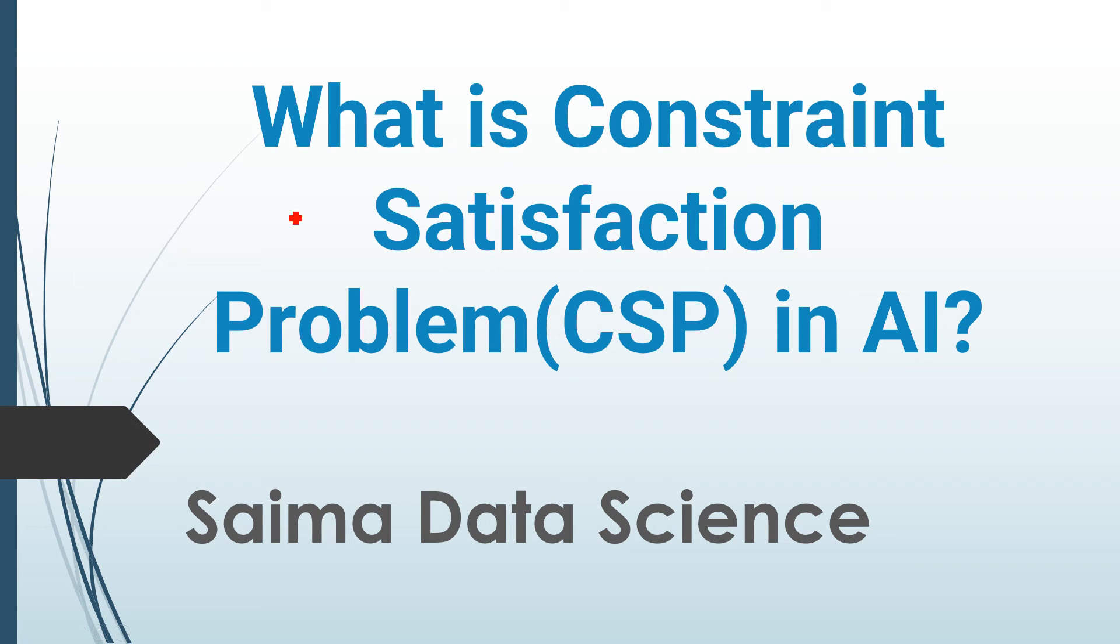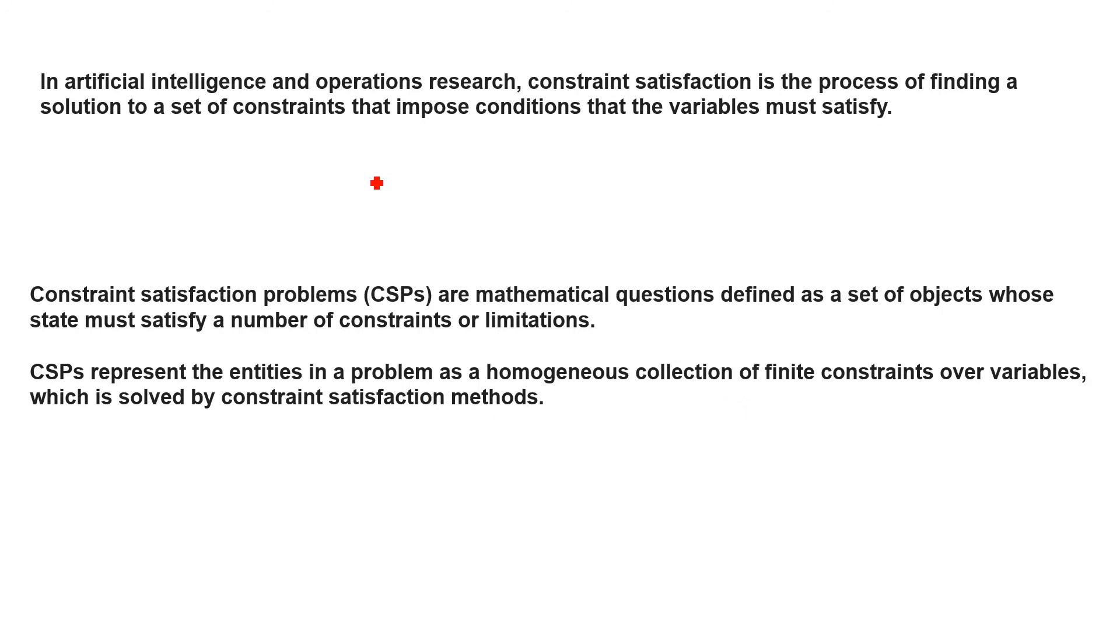In this lesson, I will explain to you the concept of constraint satisfaction problem, known by CSP in artificial intelligence. This is one of the most important topics, but I will try my best to make it as easy as possible. First, I will read the definition, then I will explain with the help of example. In artificial intelligence and in operations research, constraint satisfaction is the process of finding a solution to a set of constraints that impose conditions that the variables must satisfy.